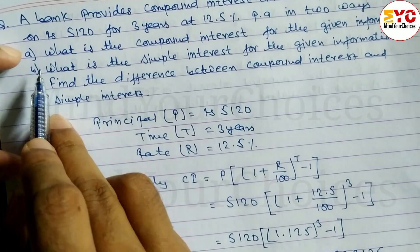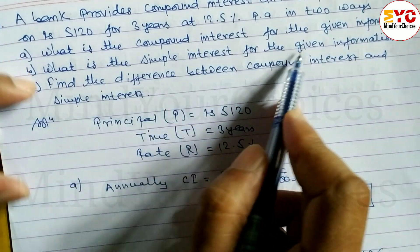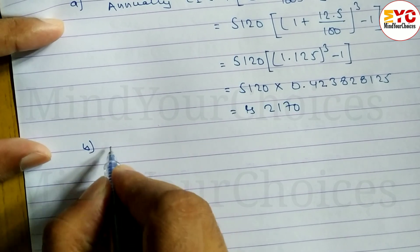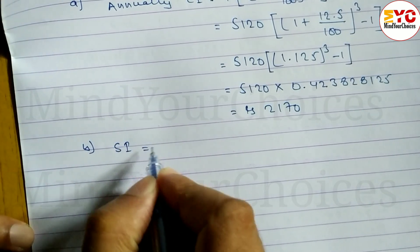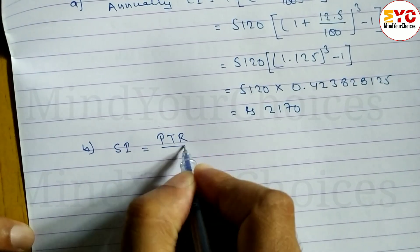Question B: What is the simple interest for the given information? We need to find SI. The formula is SI = PTR/100.